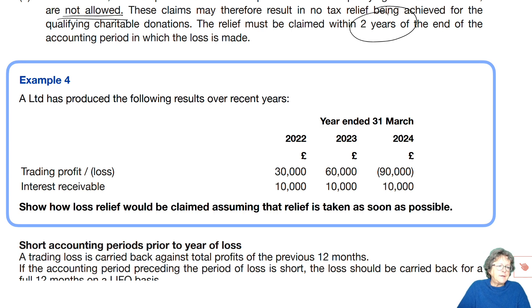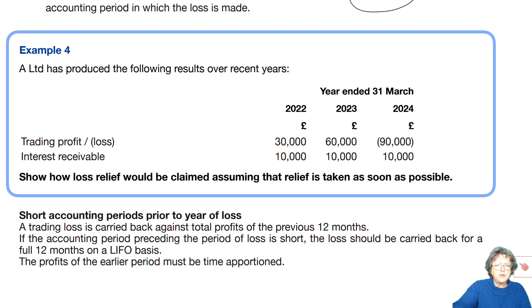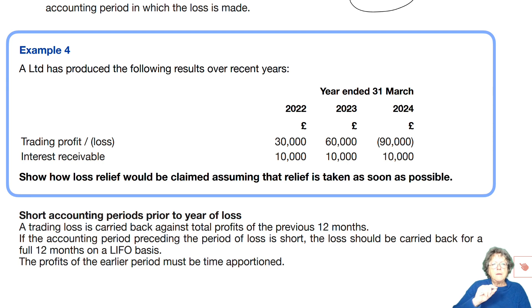Let's have a look at example number four, where A Limited produced the following results. We've got a profit in 2022, a profit in 2023, and a massive loss in 2024, with interest receivable in all three years of £10,000. Show how the loss relief would be claimed, assuming that relief is taken as soon as possible. I'm not going to show you the model answer — I'm just going to do some notes, and I'd like you to pause the recording and look at the model answer afterwards. We're in Chapter 17, and you are getting more and more aware of how tax works. I have confidence in your abilities.